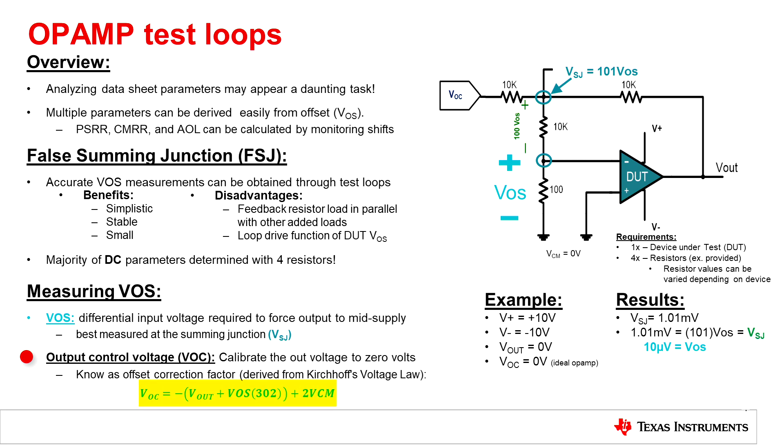This equation is derived directly utilizing Kirchhoff's voltage law using the schematic provided. In this example, we see the amplifier's offset for the given conditions is approximately 10 microvolts.